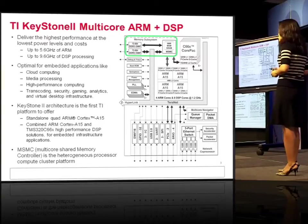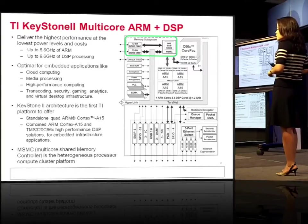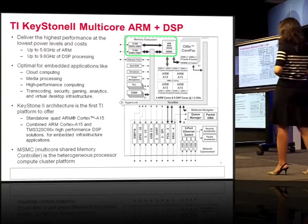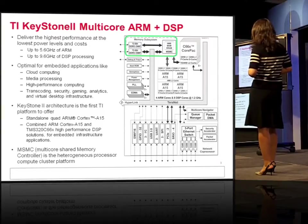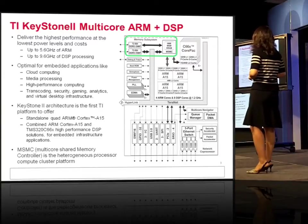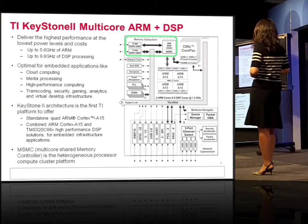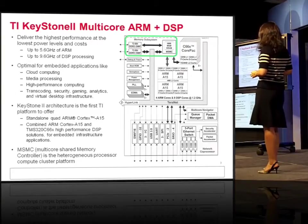In the networking case, for example, you can run L1 and L2 in DSP and L3 in ARM. ARM can schedule tasks into different DSPs, and you can do load balancing and task migration easily. Keystone 2 is also the first TI platform offering the standard quad ARM Cortex A15 combined with TI TMS C6X high-performance DSP. MISMIC — multi-core shared memory controller — is the heterogeneous processor compute cluster platform I'm going to talk about today.